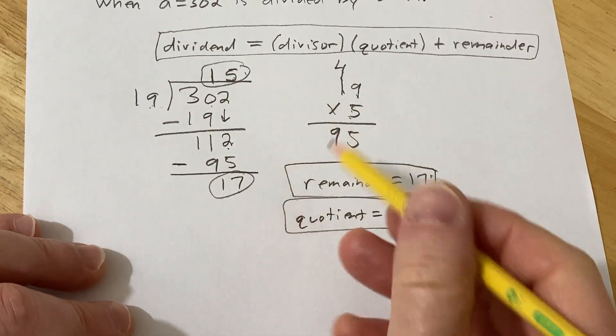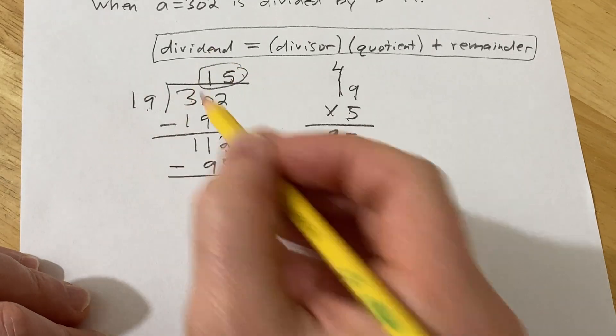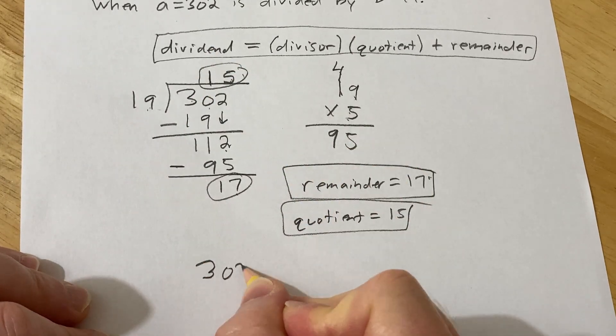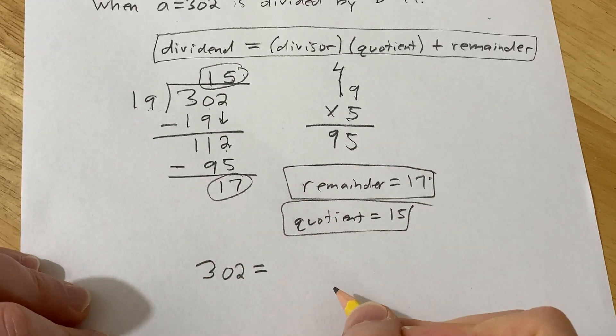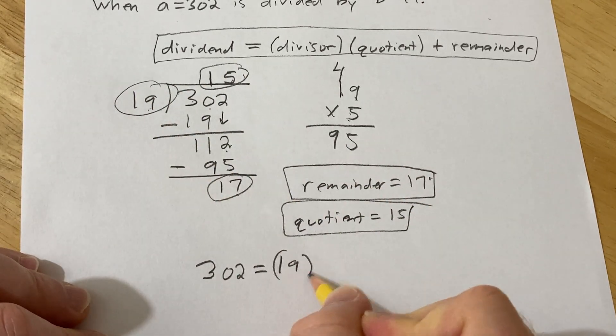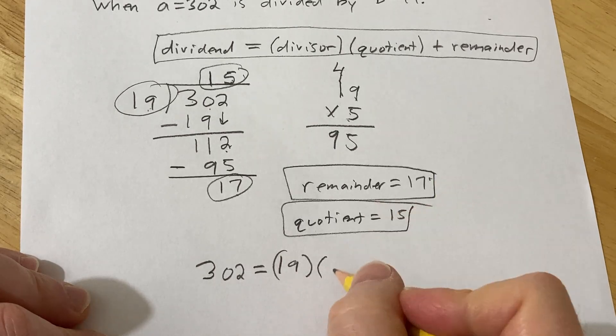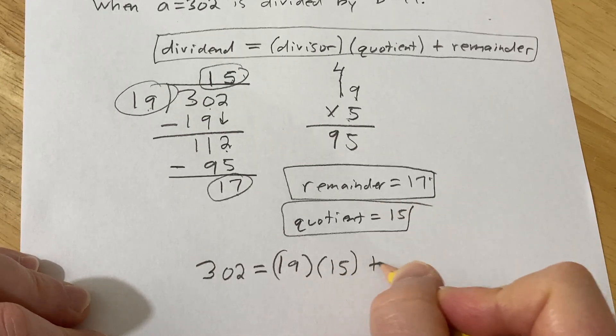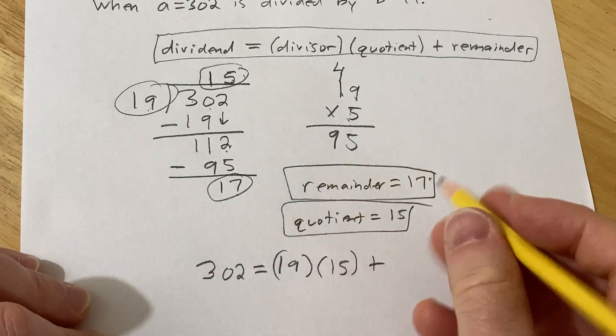If you wanted to write it using the formula I discussed earlier, it's the dividend. So 302 equals the divisor, which is 19, times the quotient, which is 15, plus the remainder, which is 17.